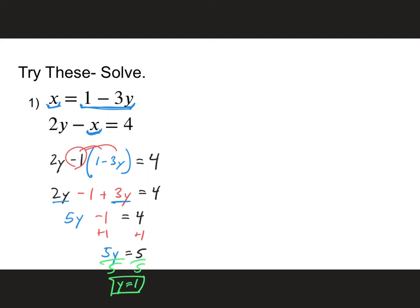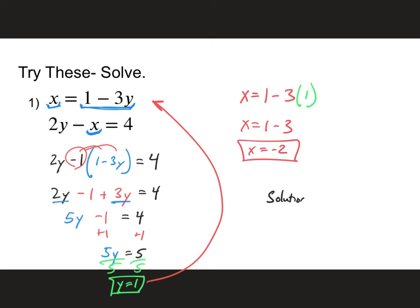I'll divide both sides by 5, and I'll come up with y equals 1. Now, I take this value for y, plug it back into one of my original equations. Again, I like that top one. x equals 1 minus 3 times 1, and I'll simplify. So that's x equals 1 minus 3, so x is equal to negative 2. So my solution is (−2, 1).